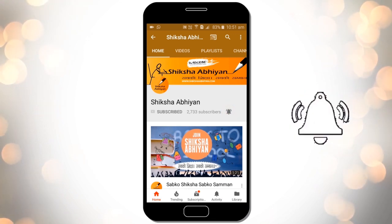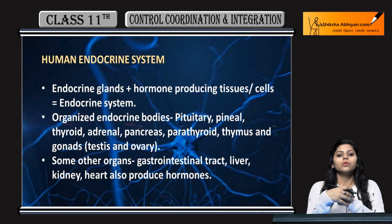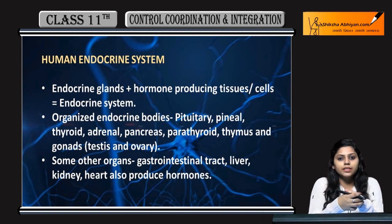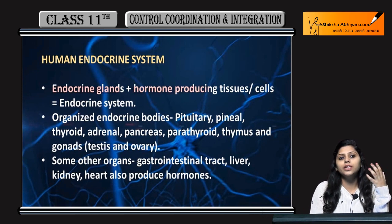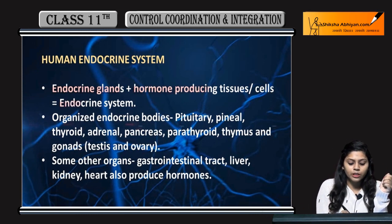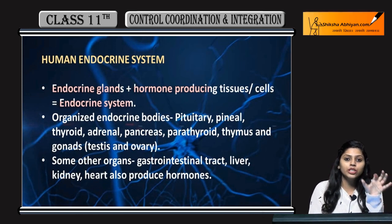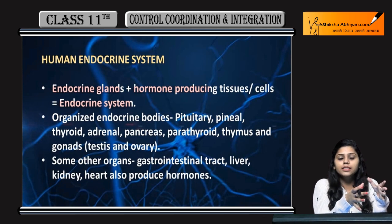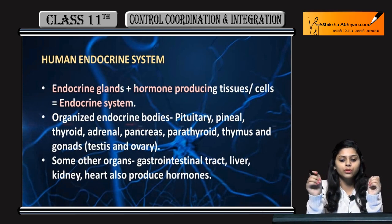Now we will study about the human endocrine system. Endocrine glands or tissues which produce hormones — they both are included under the endocrine system, which includes the endocrine glands and the cells and tissues which produce hormones.